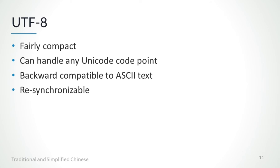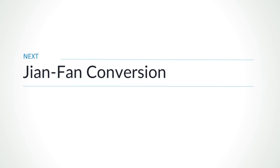Worth noting that while UTF-8 has been accepted widely — for example, XML is by default encoded using UTF-8 — there are still other Unicode encodings in use, such as UTF-16, which are used in some file systems and system APIs. So we have finished the second session on traditional and simplified characters. In the next session, we will talk about working with Chinese characters in Python. Thank you.